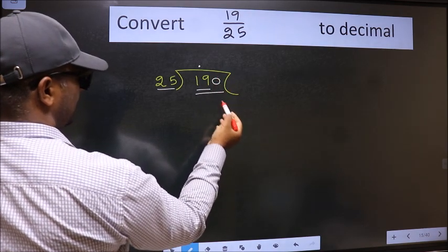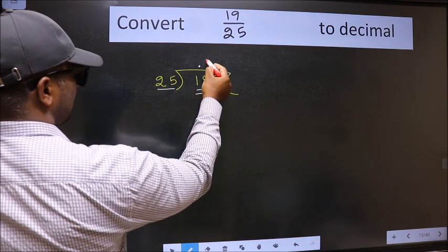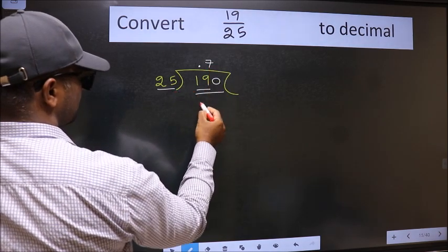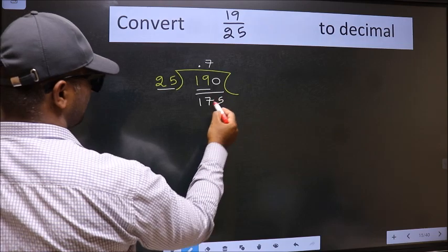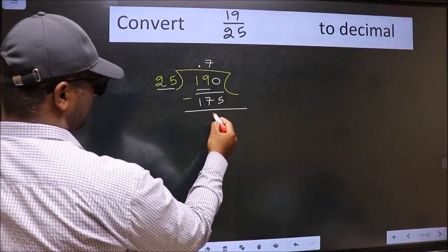So 190. A number close to 190 in the 25 table is 25 times 7, which is 175. Now we should subtract. We get 15.